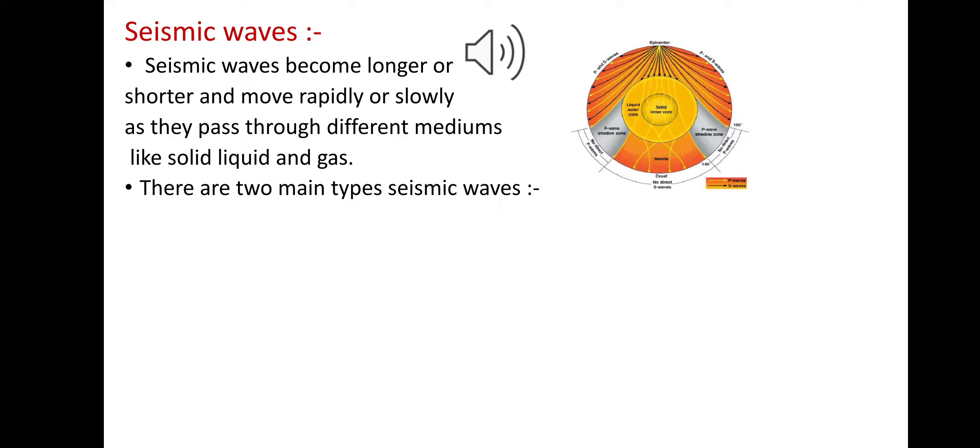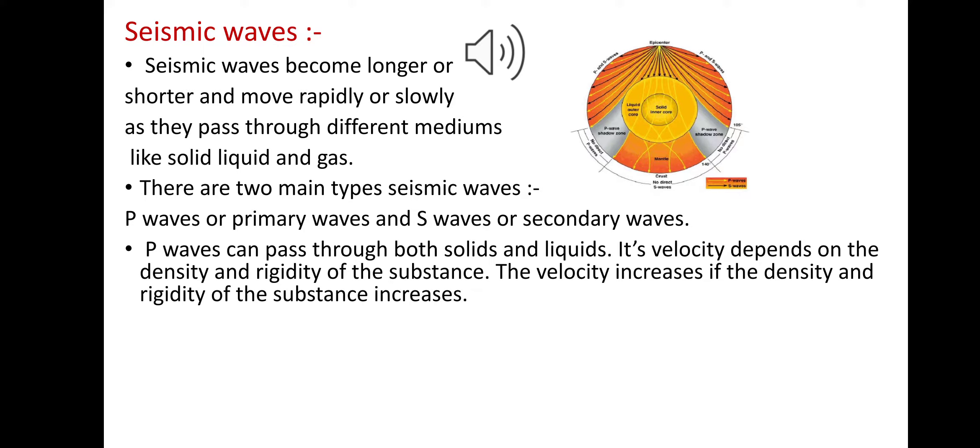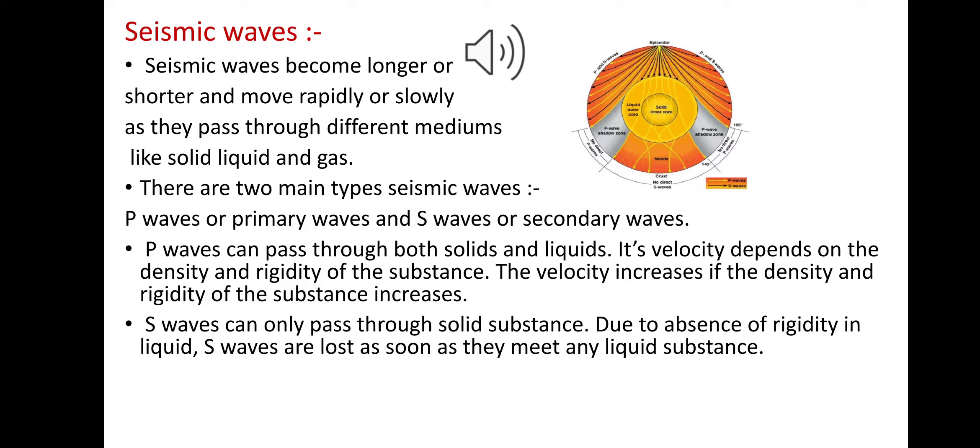One is the P wave, or primary waves, and the other is S wave, or secondary waves. P waves can pass through both solid and liquid. Their velocity depends on the density and rigidity of the substance. The velocity of P waves increases if the density and rigidity of the substance increases.